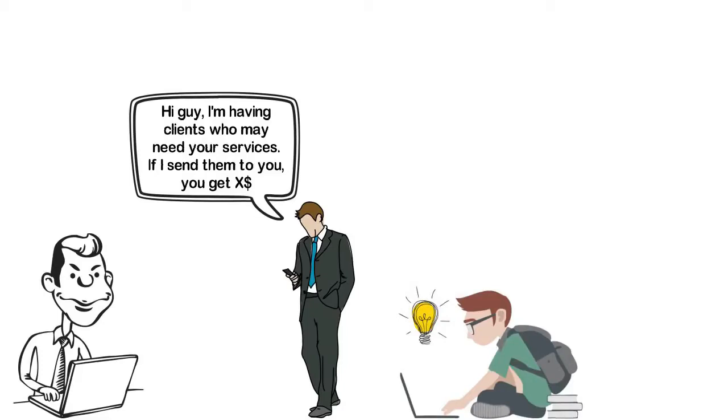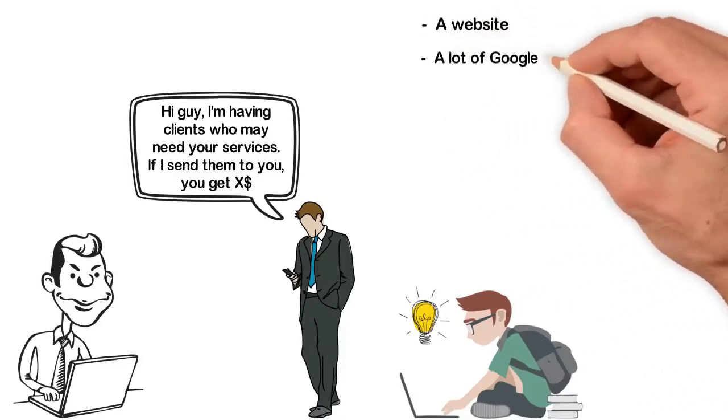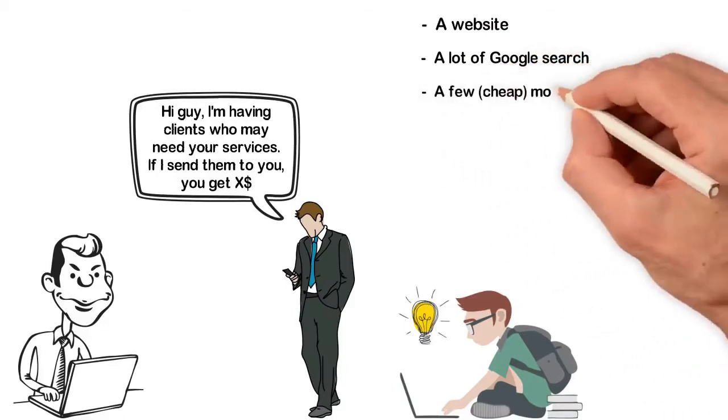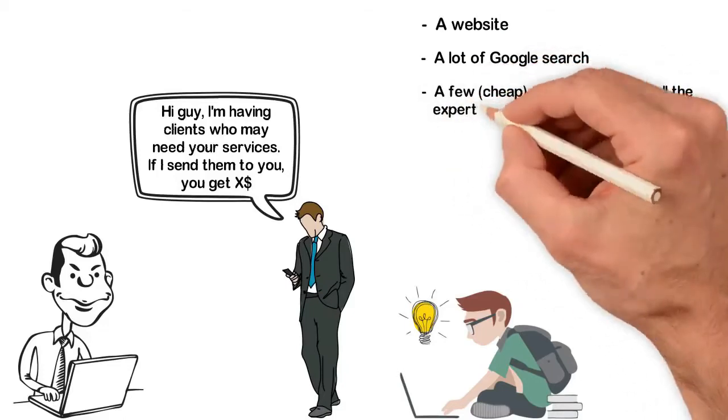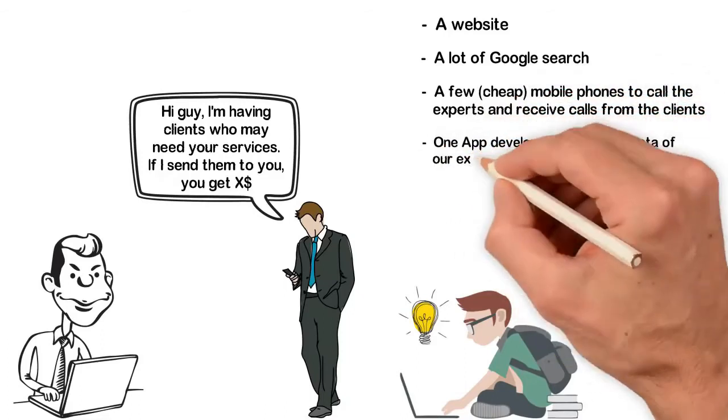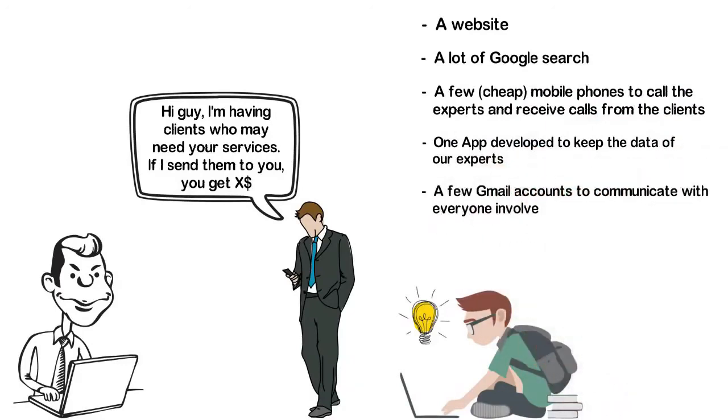Now, let me break down all of this. The whole process I explained above were created by 5 things: a website, a lot of Google search to get who could render the services I wanted to sell, a few cheap mobile phones to call the experts and receive calls from the clients, one app developed to keep the data of our experts, a few Gmail accounts to communicate with everyone involved. All of the above cost us near nothing. Not even up to the money an average person uses to buy stuff they don't need, yet we built a wonderful business around that.